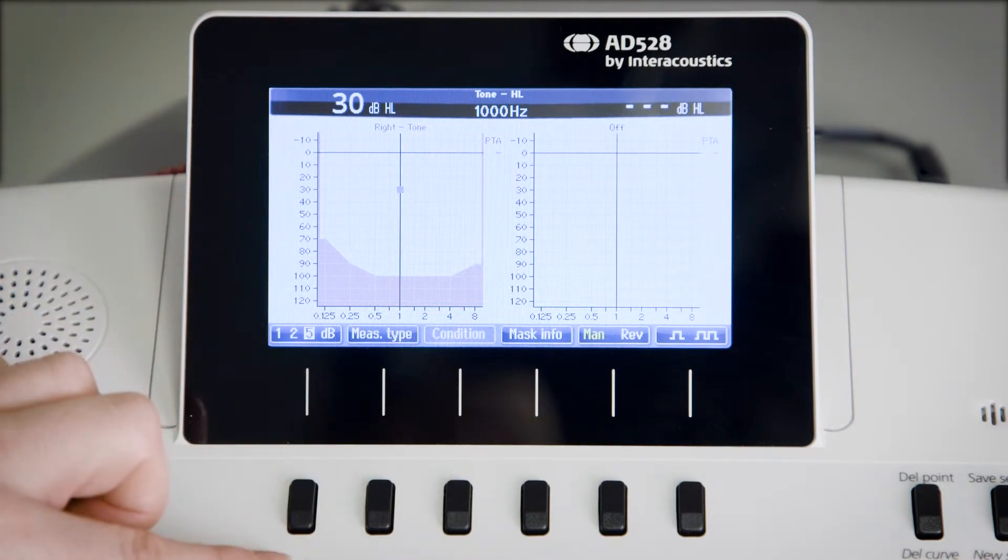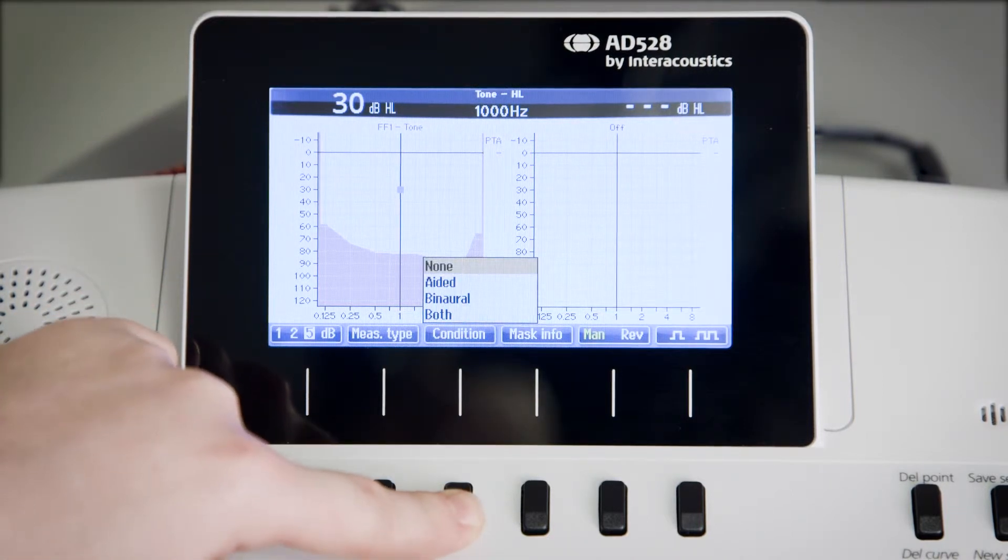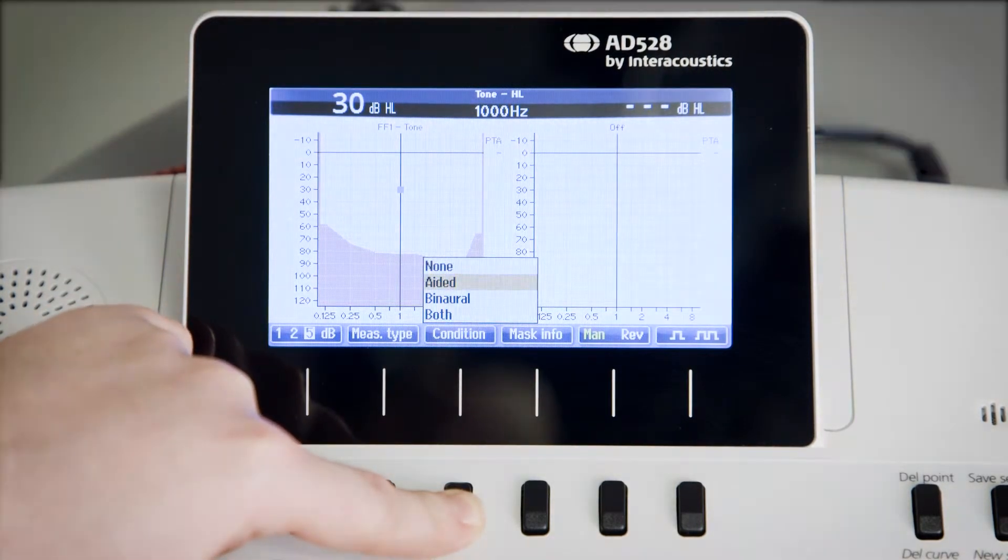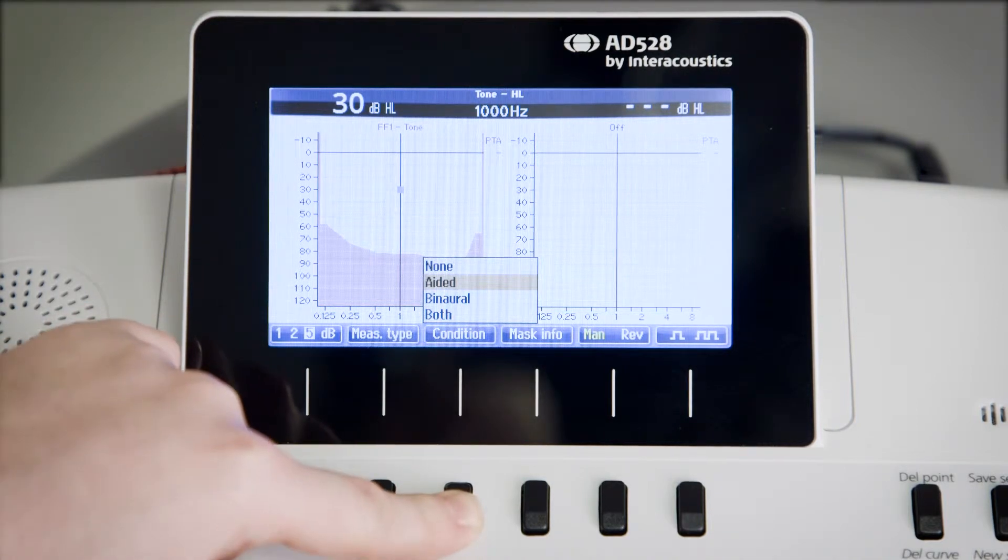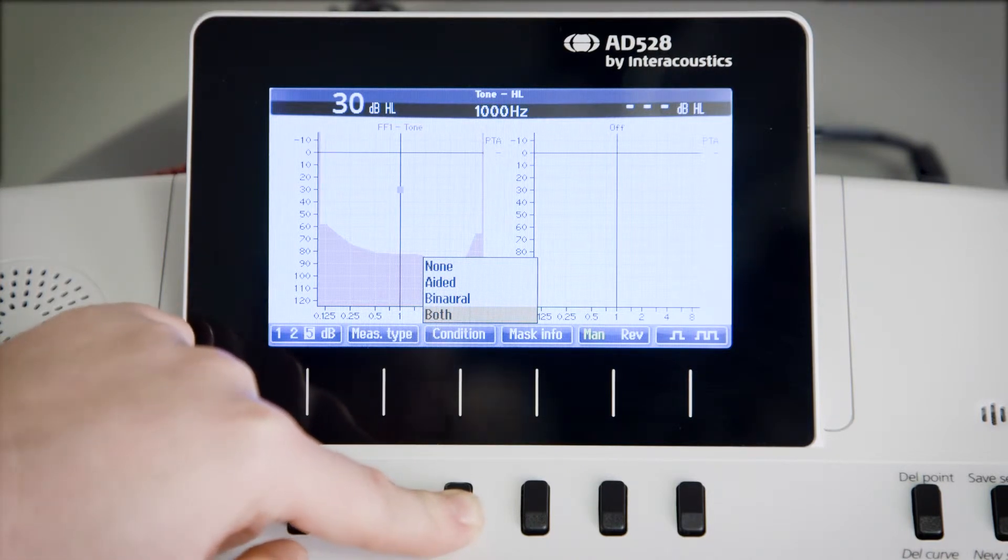The condition key will be enabled once the free field is activated. When that is the case, we can change between none, aided if you're wearing hearing aids, binaural if you want to test on both ears, and both in case the patient is both aided and testing on both ears.